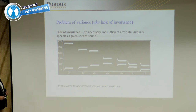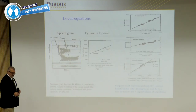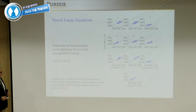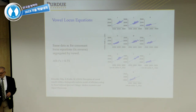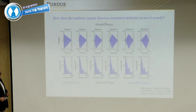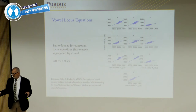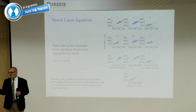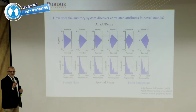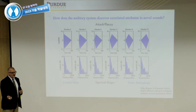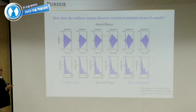A quick review of other places where covariance or correlations do a lot of work: one being locus equations for place of articulation of stop consonants in English, another being locus equations for individual vowel sounds dependent upon what consonants they're flanked by. Now the question is: can the auditory system do this, and if so, how does the auditory system discover correlated attributes?